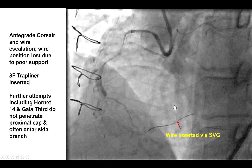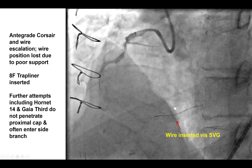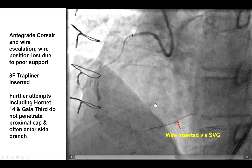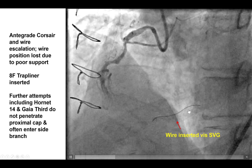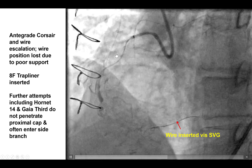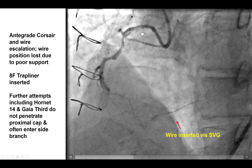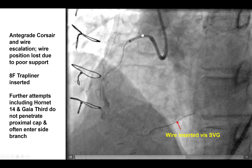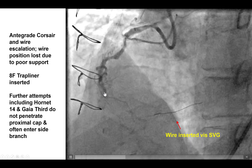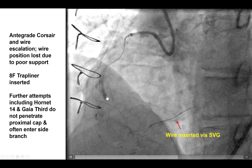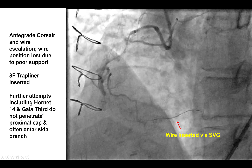Our plan was to try antegrade first, and if that did not work, then to go retrograde through the saphenous vein graft. We inserted a guide wire through the SVG for marking the distal true lumen position, and then did antegrade wire escalation. It was quite challenging. The support was poor. We did use an 8 French trap liner for extra support. And due to heavy calcification, we were unable to penetrate the proximal cap using a Horner 14 as well as a Gaia 3rd.